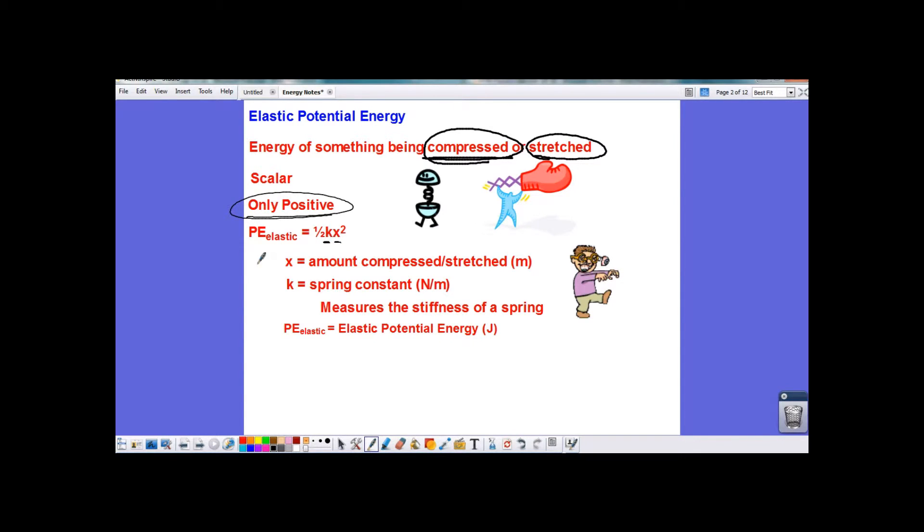So let's look at what these variables are. X is how far you either compress or stretch the spring. K is the spring constant. It's measured in newtons per meter. The spring constant tells you how easy or difficult it is to stretch the spring.